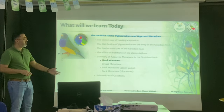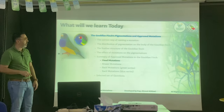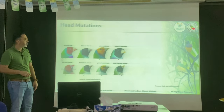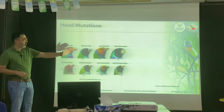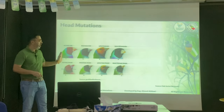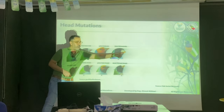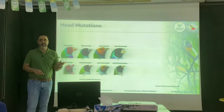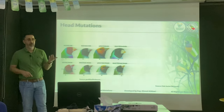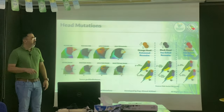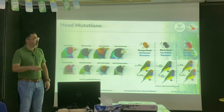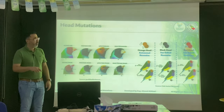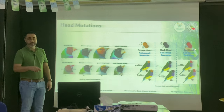Let's look at head mutations. We have the classics, and added to that is yellow-tipped beak — what does yellow-tipped beak tell you? It's a carrier of yellow head or red head. Autosomal recessive is the orange head. Sex-linked recessive is the black head. Sex-linked dominant is the red head.